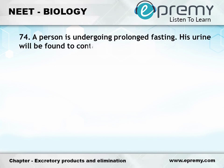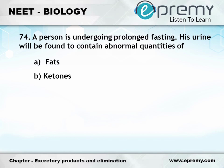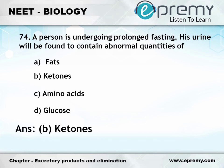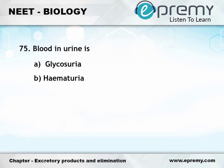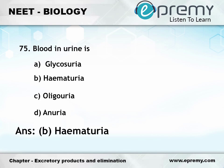Question number 74: A person is undergoing prolonged fasting. His urine will be found to contain abnormal quantities of — Option A: Fats, Option B: Ketones, Option C: Amino acids, Option D: Glucose. The answer is Option B: Ketones.